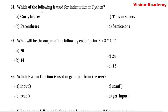Question number 24. Which of the following is used for indentation in Python? Option A: curly braces. Option B: parenthesis. Option C: tabs or spaces. Option D: semicolons. Here, option C is the right answer — tabs and spaces are used for indentation.